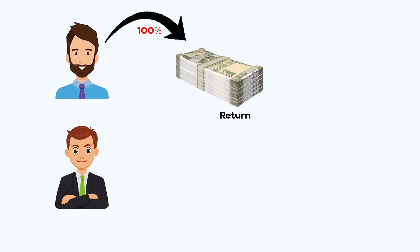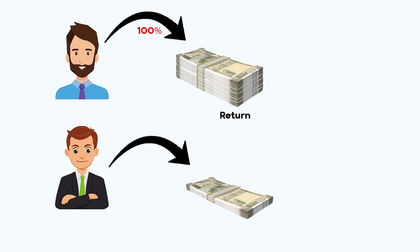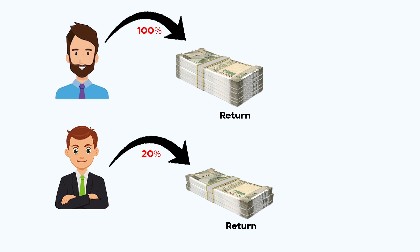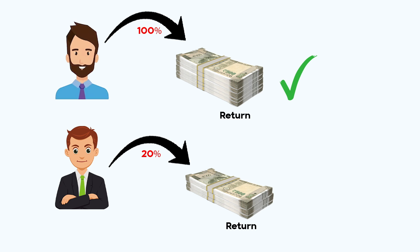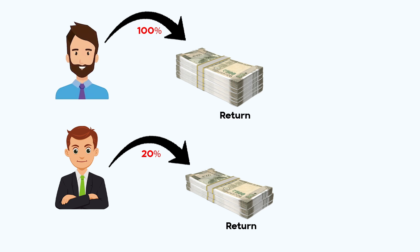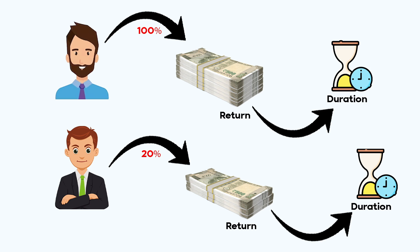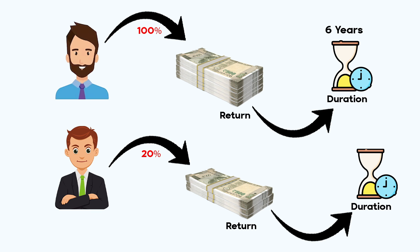If I tell you two names — one investment gave a 100% return and this investment gave a 20% return — who is better? Obviously you will say the 100% return is better. But this information alone doesn't tell us enough, because the 100% return is over 6 years and the 20% return is also over a certain period. The 20% return could actually be a 100% equivalent. So how do investors know which investment is truly better?